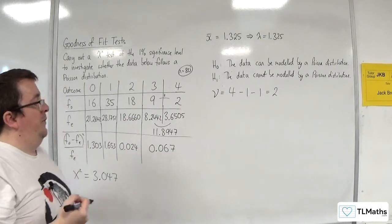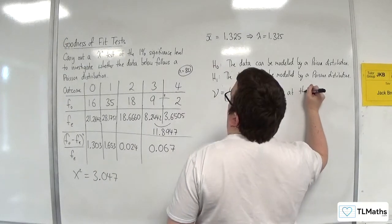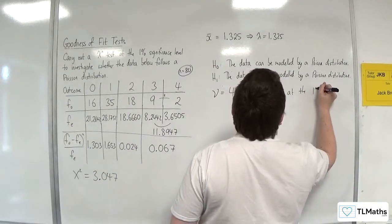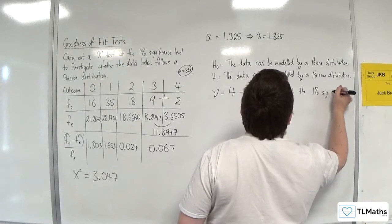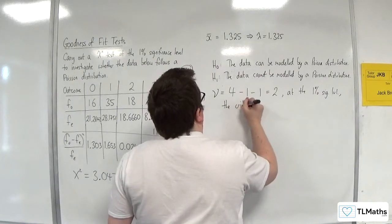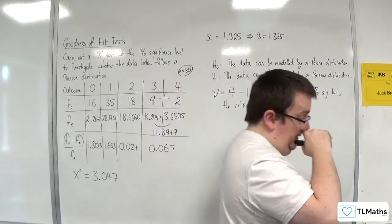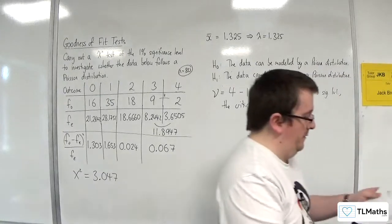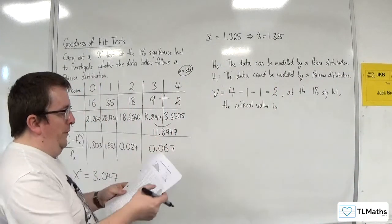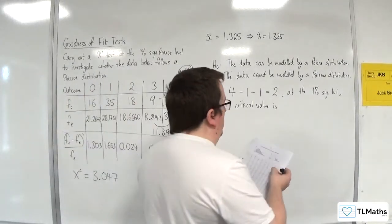So nu is equal to two, at the 1% significance level. The critical value is, so on page 13 of the OCR-MEI formula booklet, 1% significance level, nu is two, so 9.210.